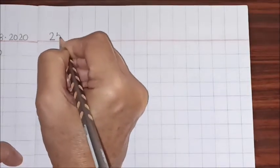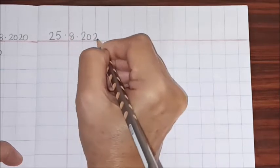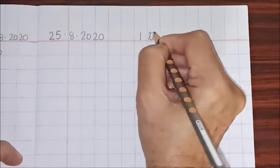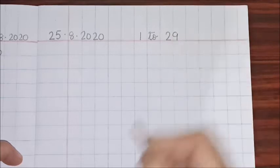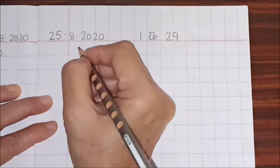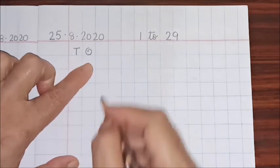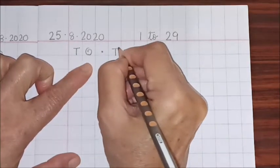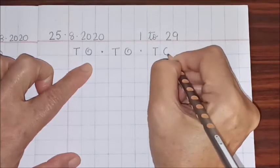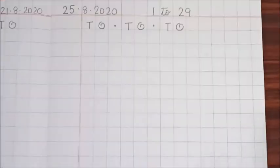25.8.2020. Write the heading 1 to 29. And do we write the numbers just like that? No. We will first write tens house and ones house. T O dot, T O dot, T O dot, T O. Only three T O's today children. We will begin from number one.